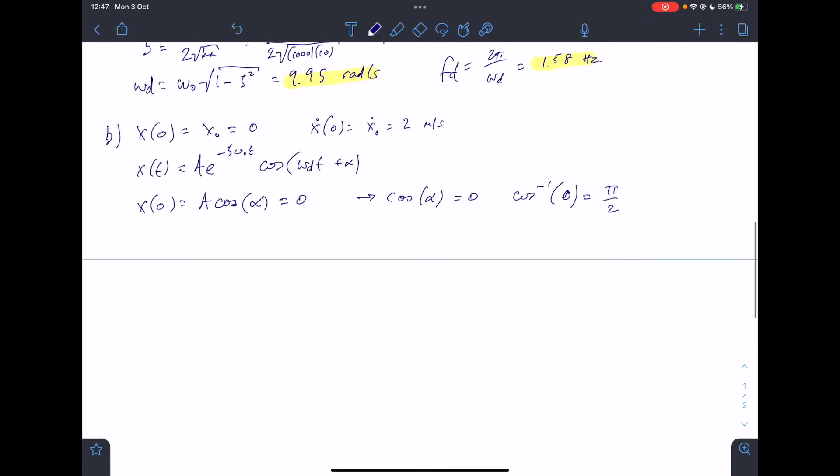We now need to use the other initial conditions to solve the other unknowns. To do that, we need to find the derivative of this equation. So x dot of time, A is a constant so that can just sit outside. And then we've got to use the product rule inside those brackets. So I'm going to take the derivative of the exponential first: minus zeta omega naught e to the minus zeta omega naught t times cosine. And then the product rule means I also have to take the exponential again, and then I've got a minus omega d sine of omega d t plus alpha.